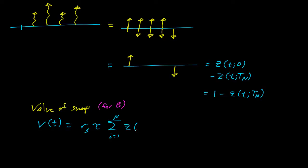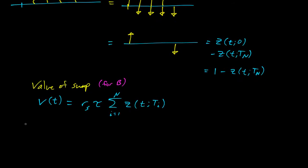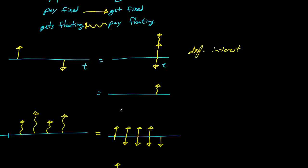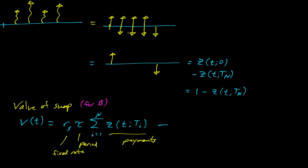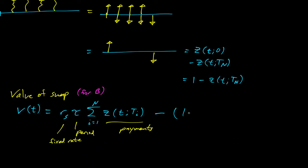Every payment is a fixed interest payment, which we can write as a zero coupon bond Z at t_i. So the fixed part is R_s times tau times the sum of Z(t_i). Then the floating part is negative for B — since B is paying the floating part, we subtract — and the floating payments calculation gives us one minus Z(tn).